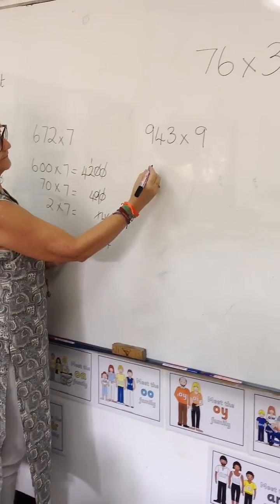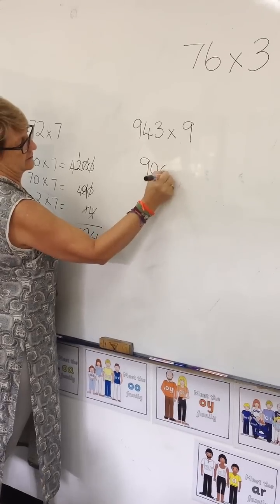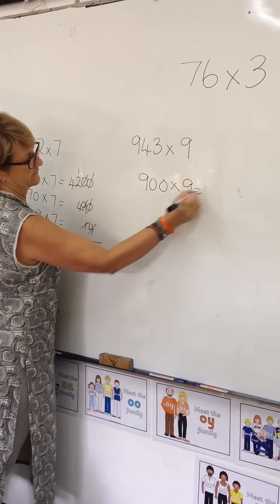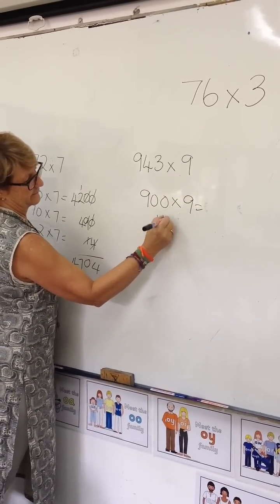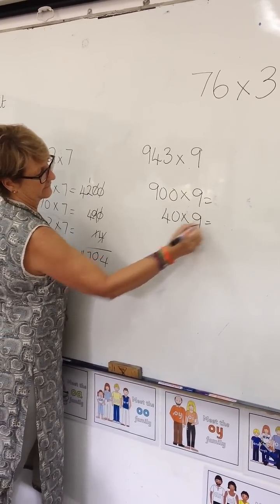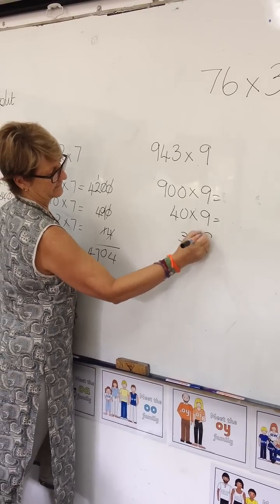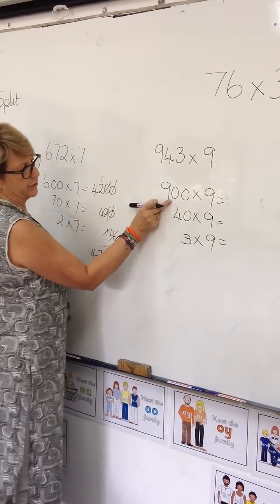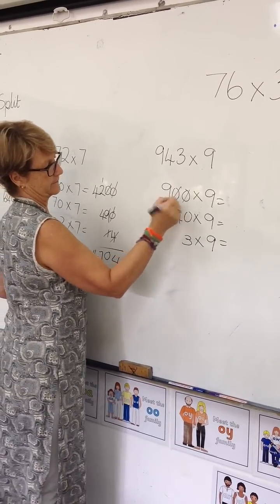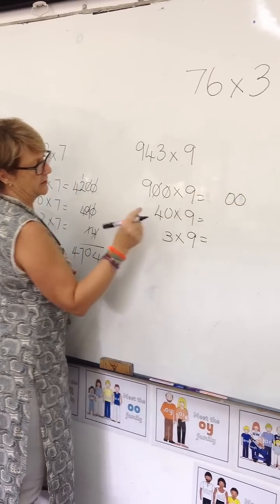Alright, what do we do? 900 times 9, 40 times 9, 3 times 9. What do I do? Cross that through, put it down. Now what do I do?